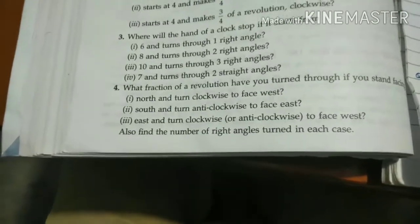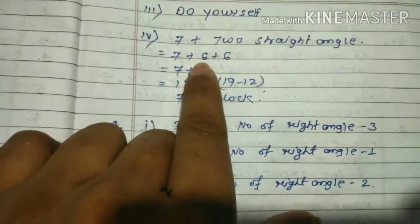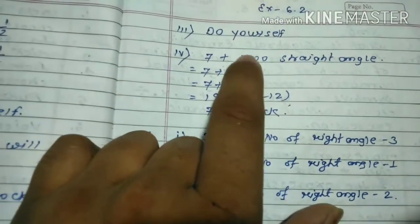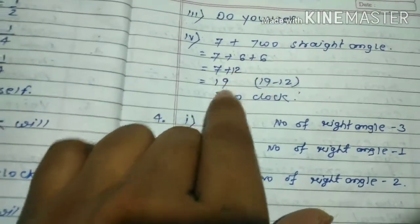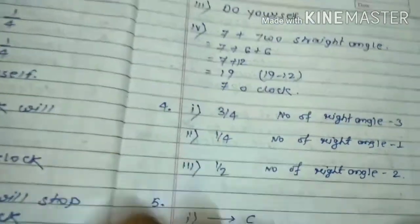Two straight angles means 6 and 6 - one straight angle equals 180 degrees, which is 6 points. So 7 plus 12 equals 19, and 19 minus 12 equals 7 o'clock.